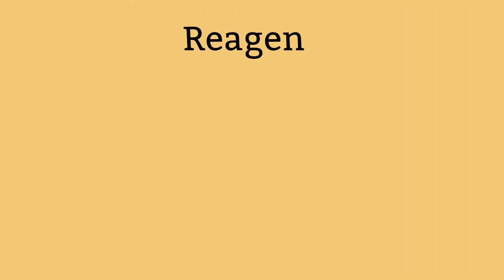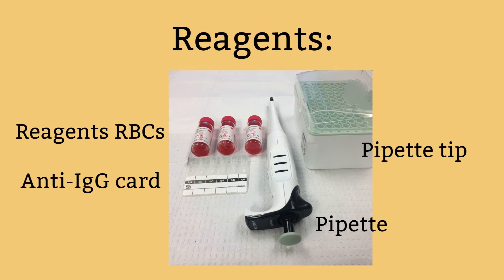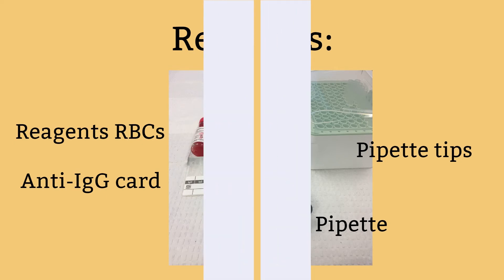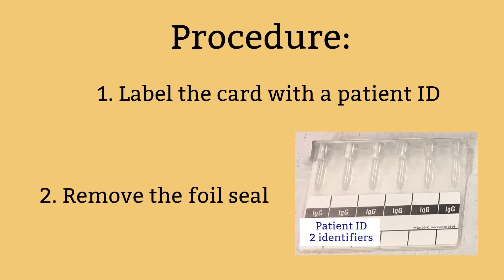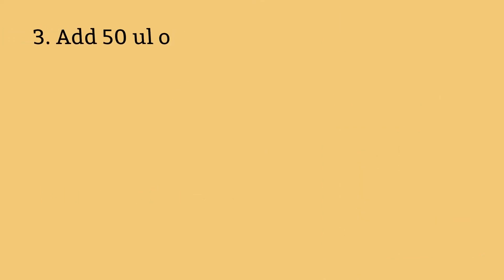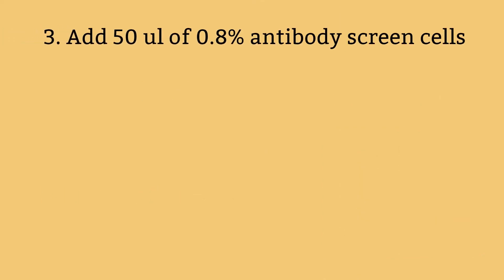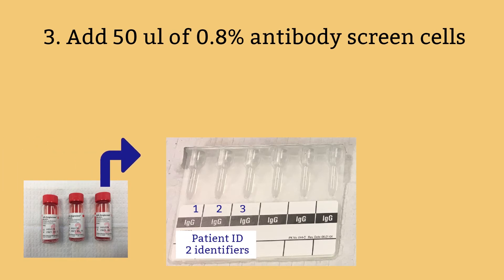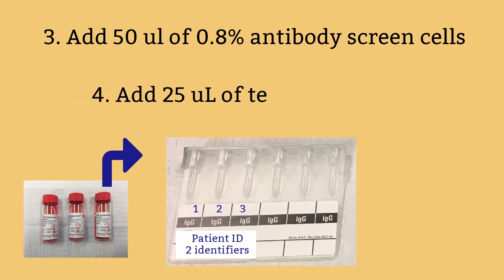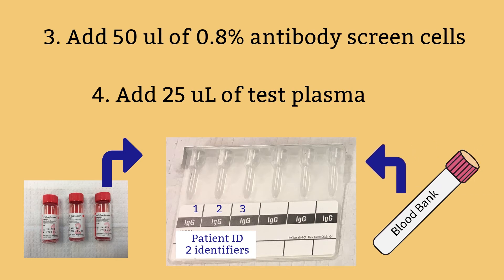For the gel method, we will need an anti-IgG card and antibody screen cells at 0.8%. Step 1: Label the card with patient ID — remember to always use two patient identifiers. Step 2: Remove the foil seal from the microtubes to be used. Each card has six microtubes; we will be using three screening cells, so only remove the foil for those three microtubes. Step 3: Add 50 microliters of 0.8% antibody screen cell suspension to the labeled microtube. Be careful not to let the tip of your pipette touch the gel card or the liquid inside. Remember to change the pipette tip for each screening cell.